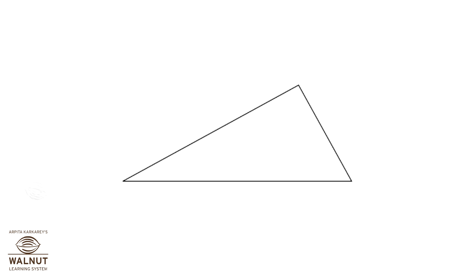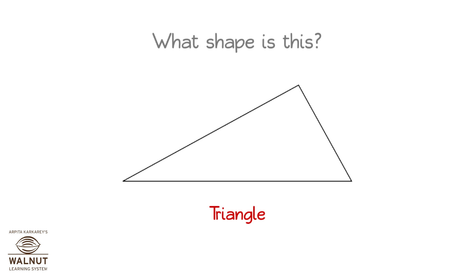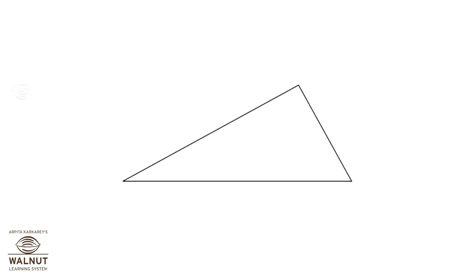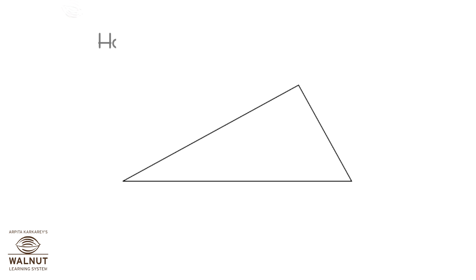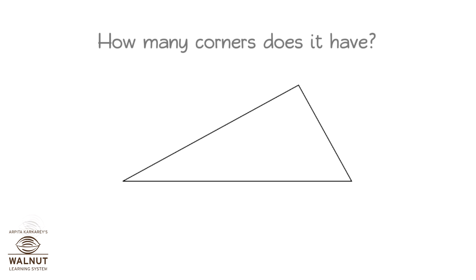What shape is this? Triangle. How many sides does it have? Three. How many corners does it have? Three.